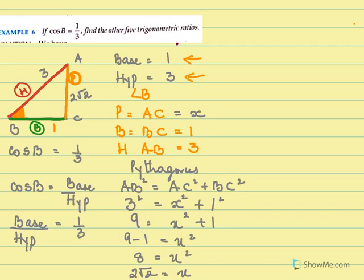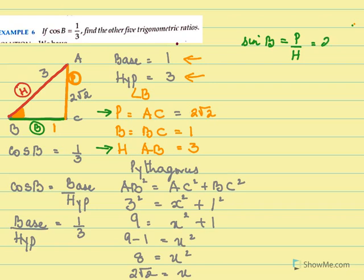Now I have to find all my ratios. First I start with sine B. Sine B is perpendicular over hypotenuse. And I have already found my perpendicular AC is 2 root 2. So perpendicular over hypotenuse — for B we saw our perpendicular was AC — that would be 2 root 2 over 3. Now that we have found sine, we can immediately find cosec. Cosec will be hypotenuse over perpendicular, that is 3 over 2 root 2.